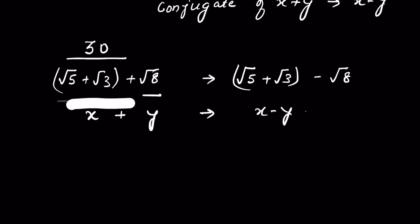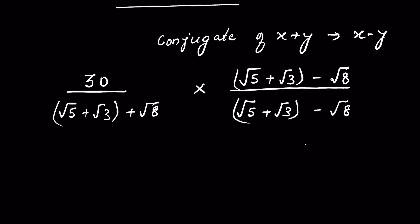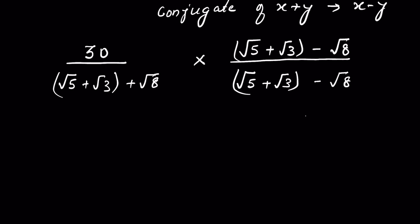So let's multiply and divide by the conjugate. We multiply and divide by the same number because that means multiplying by 1, and in that way we are not changing the question. So we multiply and divide by square root of 5 plus square root of 3 minus square root of 8. This will give us 30 multiplied by square root of 5 plus square root of 3 minus square root of 8.